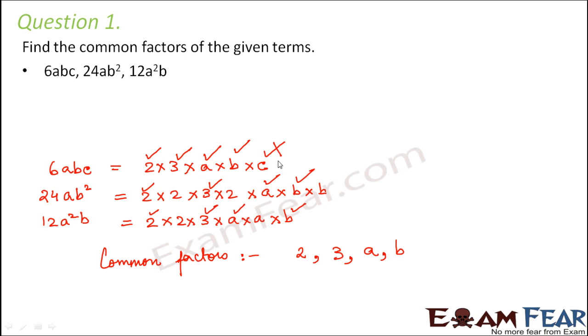Now for example, c. c is present in one of them. Or even if c is present in two of them, so c is still not a common factor because it is not present in the third term. So in order to become a common factor, that particular factor must be present in all the terms.